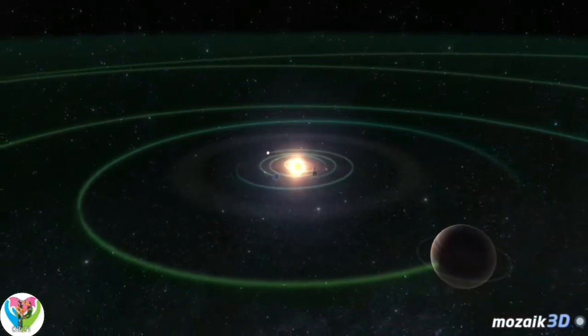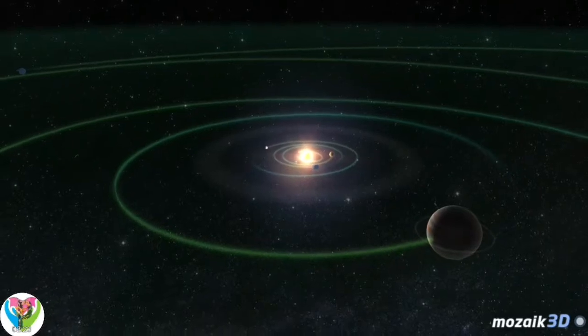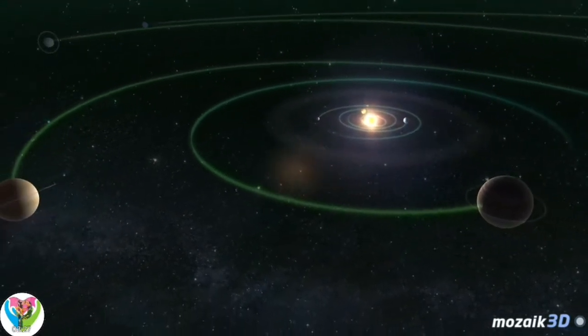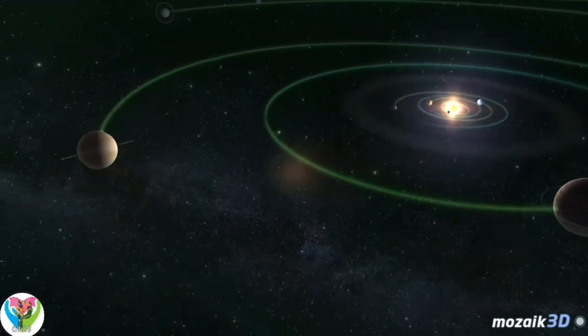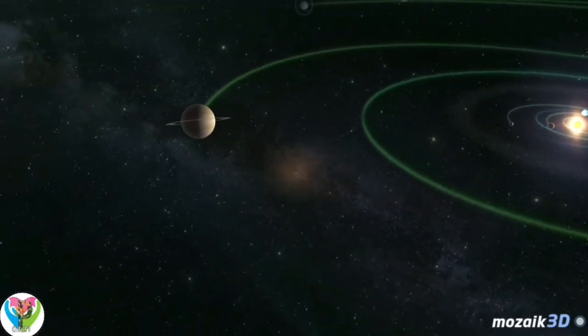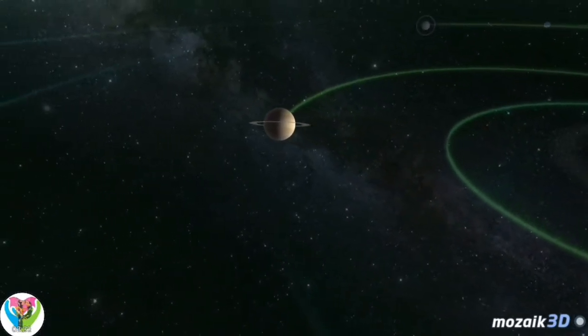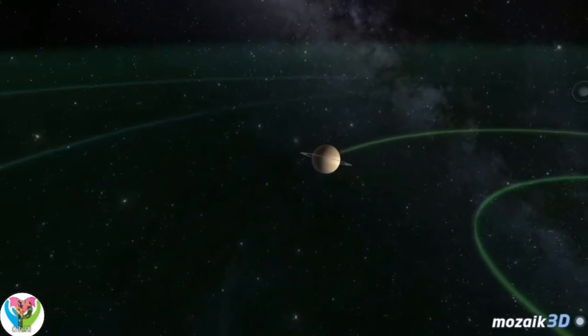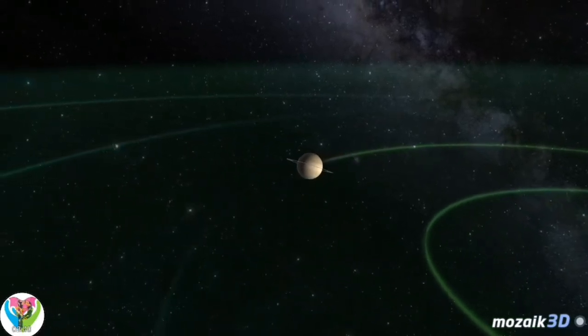All of the planets orbit the Sun on nearly the same plane, in the same direction. Their motion is direct, which means they move in an anti-clockwise direction, as seen from the North Pole of the Earth. Except for Venus and Uranus, their rotation is direct too. The Sun also rotates in this direction.